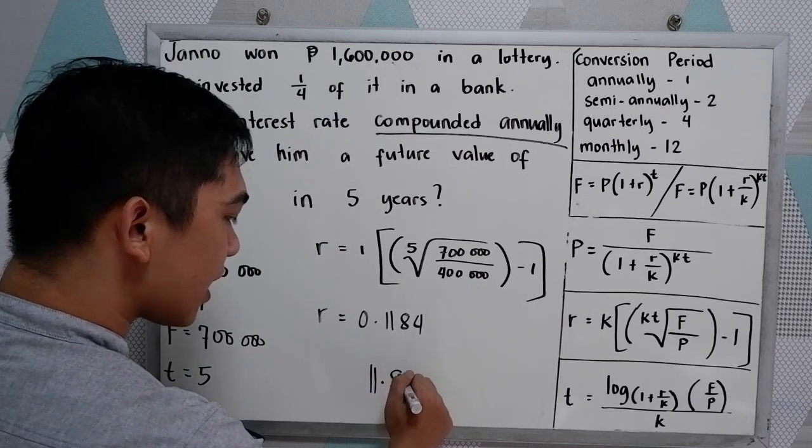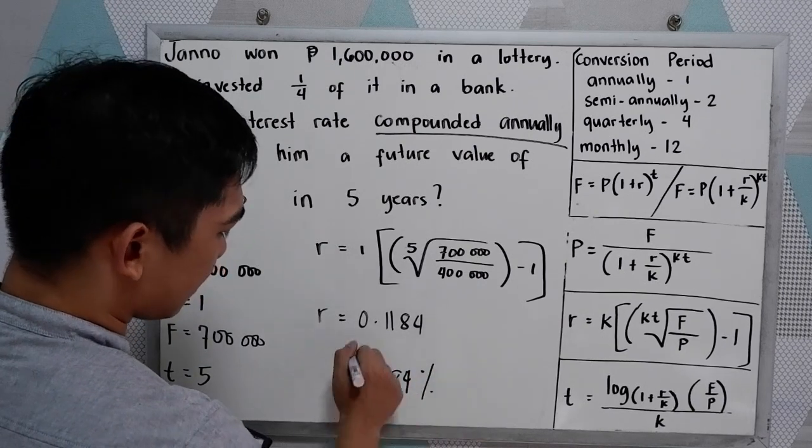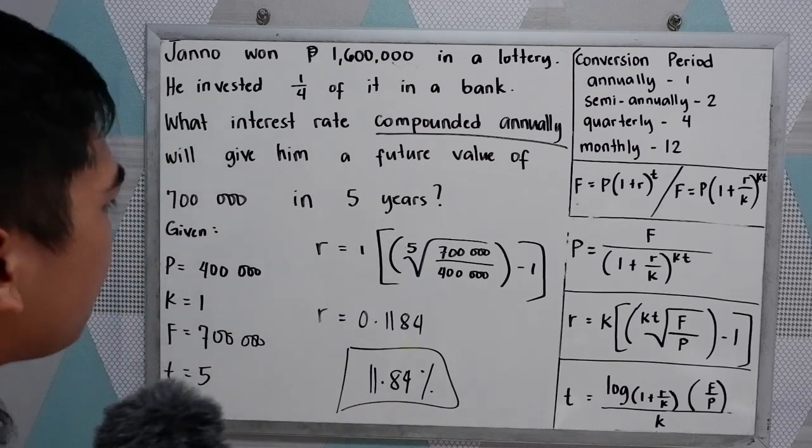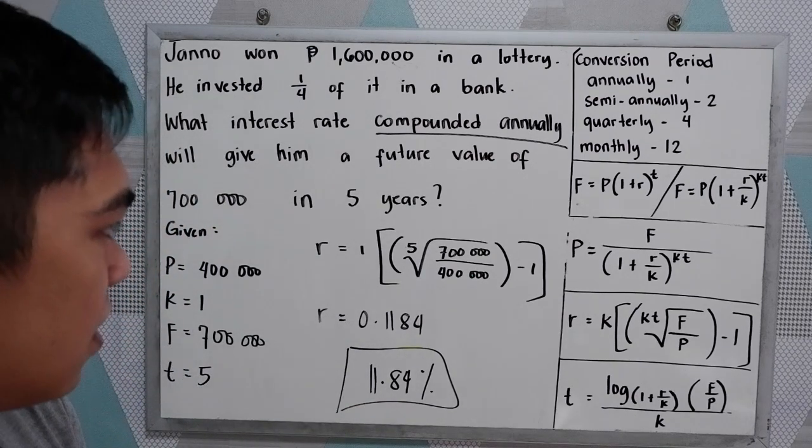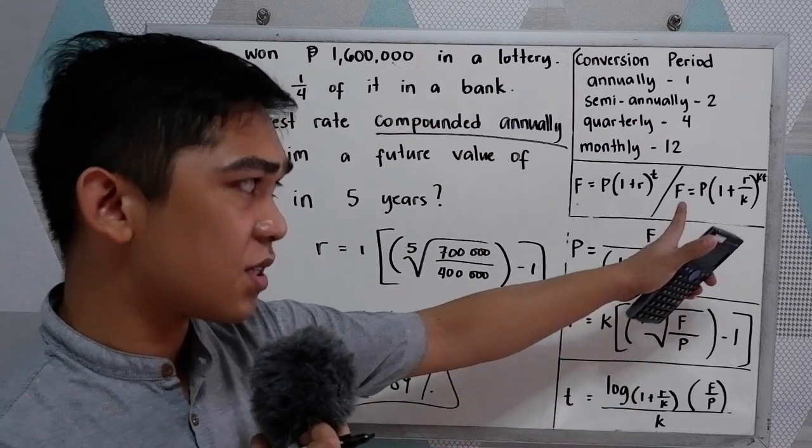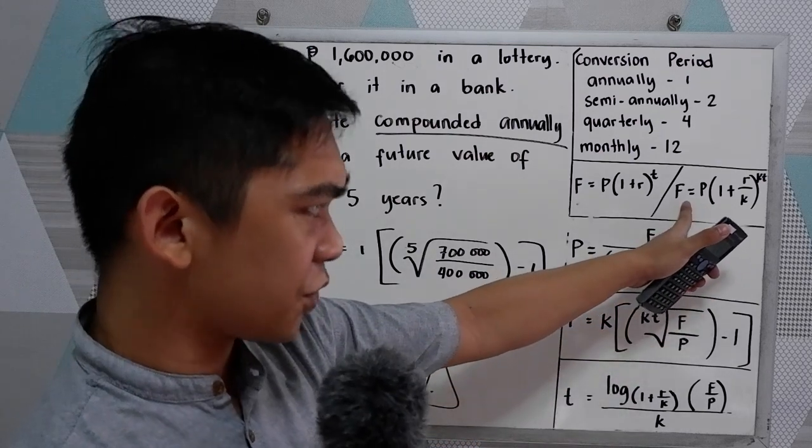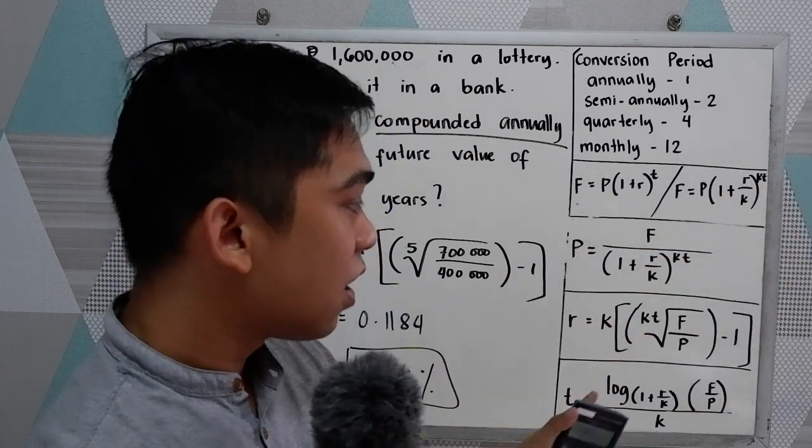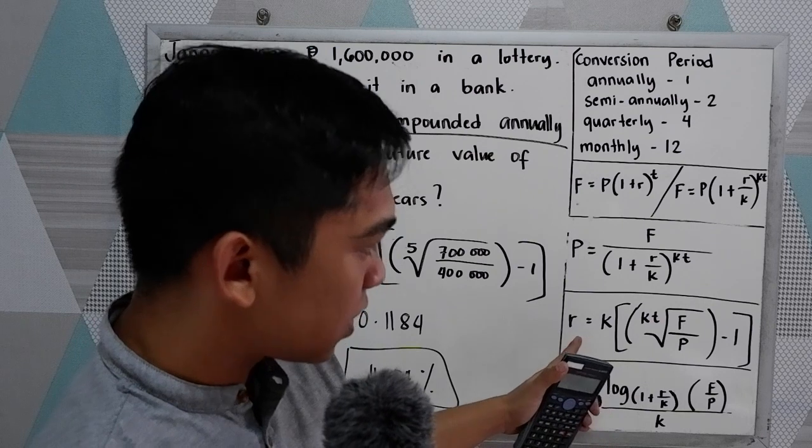That would be the rate. So if you want to find the derivation of this, use the formula for our future value, then solve for R if you want to derive this formula.